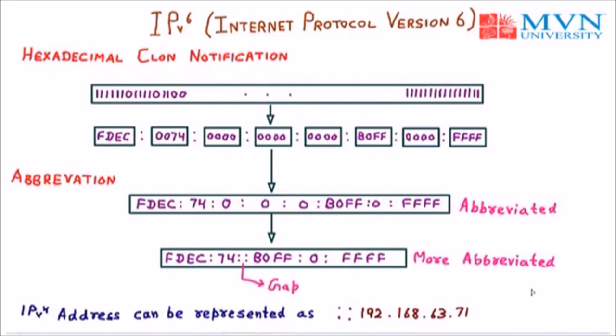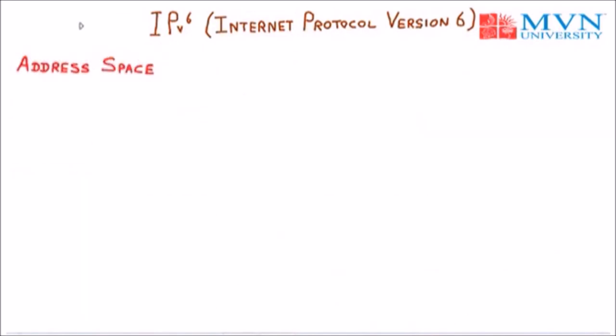Now we will discuss the address space of IPv6. Address space is the space utilized by a particular IP protocol. The address space formula is 2 raised to the power N, where N is the number of bits. In IPv6, the number of bits is 128, so the address space is 2 raised to the power 128. So we have 2^128 possible addresses in IPv6.